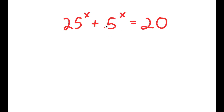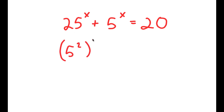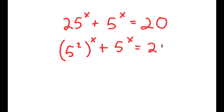In this problem, I have 25 to the power of x plus 5 to the power of x is equal to 20. I'm going to first start by rewriting 25 to the power of x as 5 squared to the power of x — I simply substituted 5 squared for 25. So I have this plus 5 to the power of x is equal to 20.